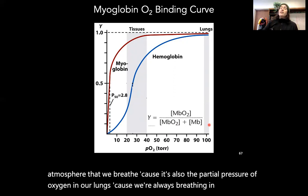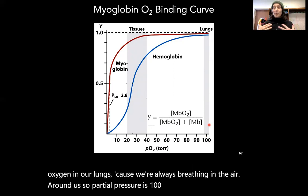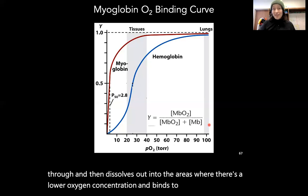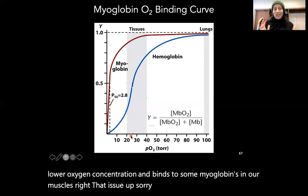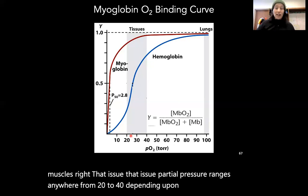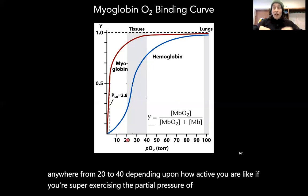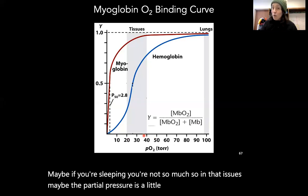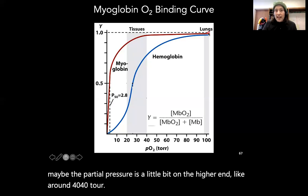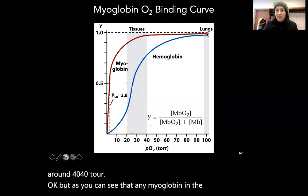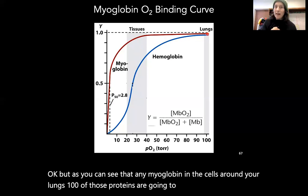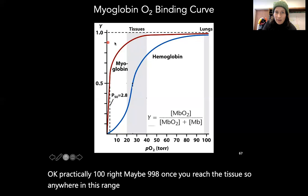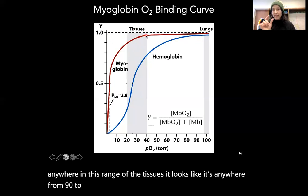As oxygen moves onto hemoglobin and gets pumped through and dissolves out into areas of lower oxygen concentration, it binds to myoglobin in our muscles. The tissue partial pressure ranges from 20 to 40 torr depending on how active you are. If you're exercising hard, partial pressure is really low because you're using all that oxygen to create energy. Any myoglobin in cells around the lungs at 100 torr will be practically 100% oxygen-bound. Once you reach the tissue range of 20–40 torr, it looks like 90–97% of myoglobin still have oxygen bound.